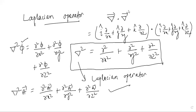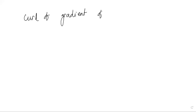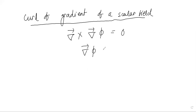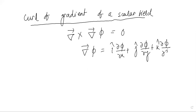In addition, let us look at some more properties involving the del operator. First, what is the curl of the gradient of a scalar field? The gradient of scalar φ is ∇φ, and the curl of that is del cross (∇φ). The gradient ∇φ = î ∂φ/∂x + ĵ ∂φ/∂y + k̂ ∂φ/∂z.